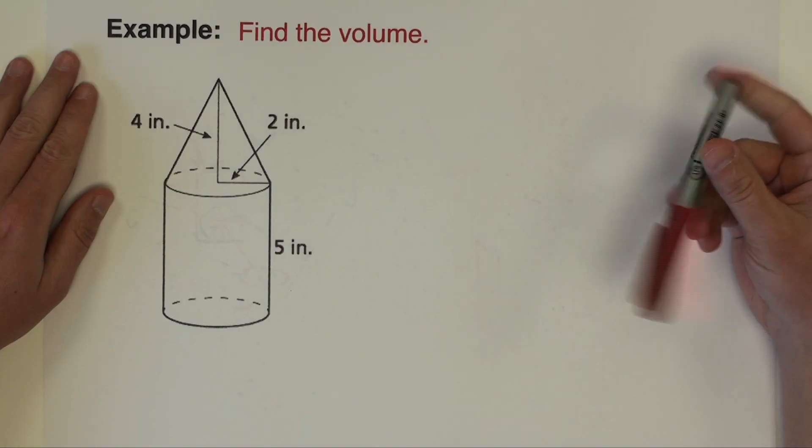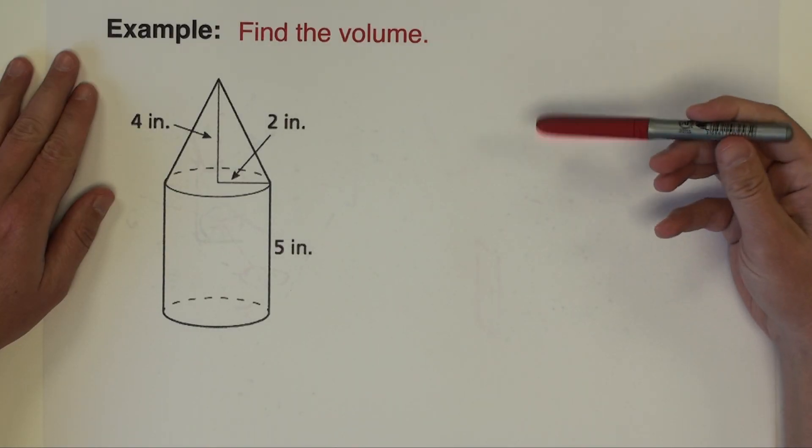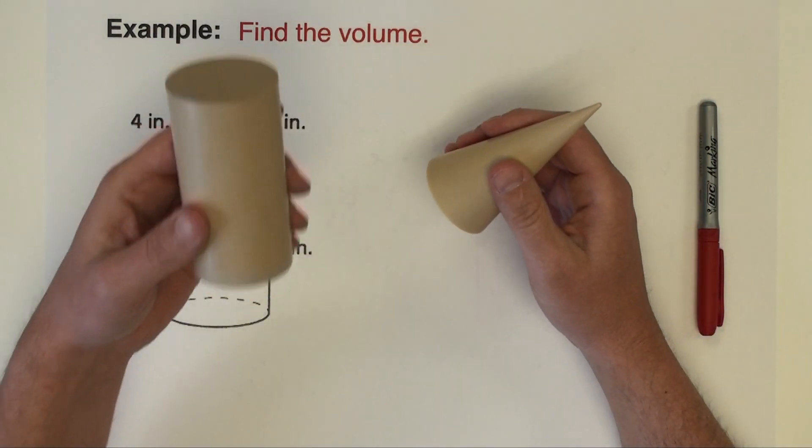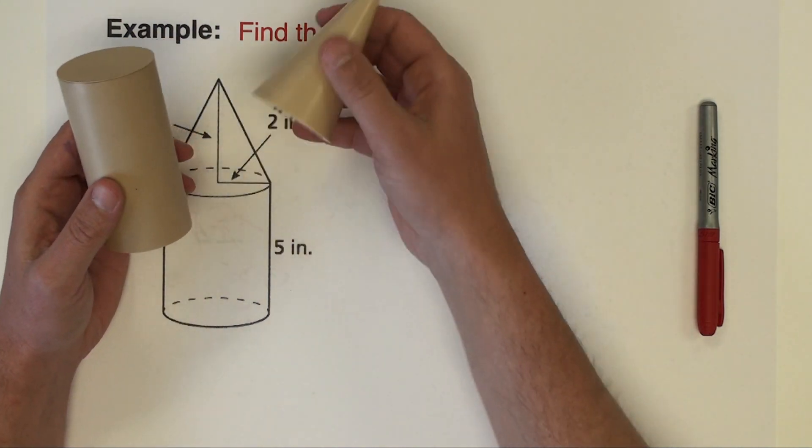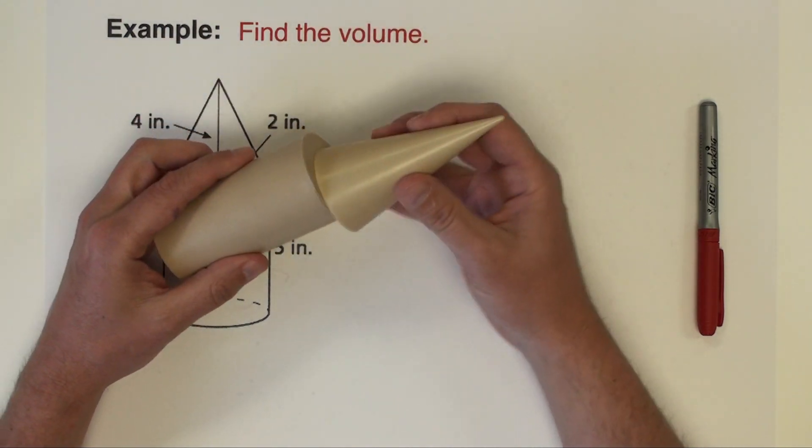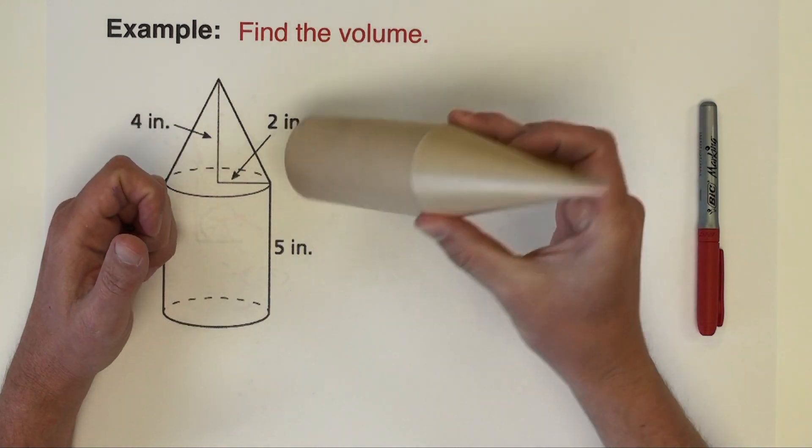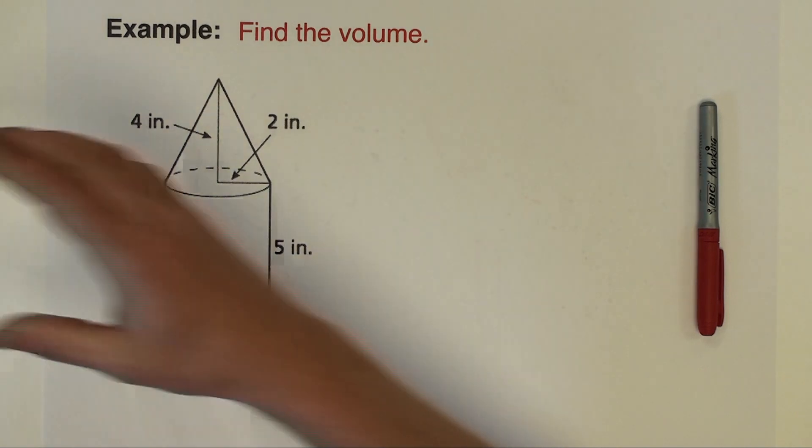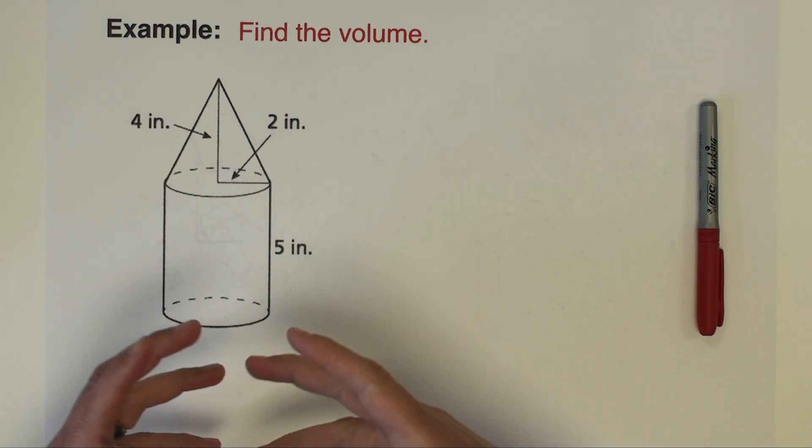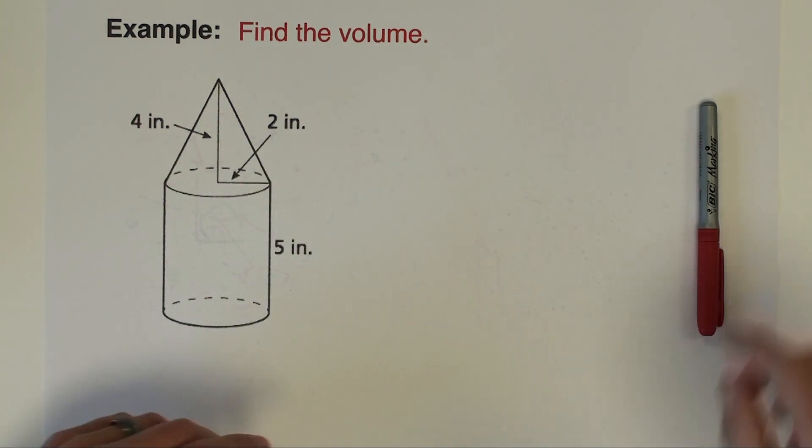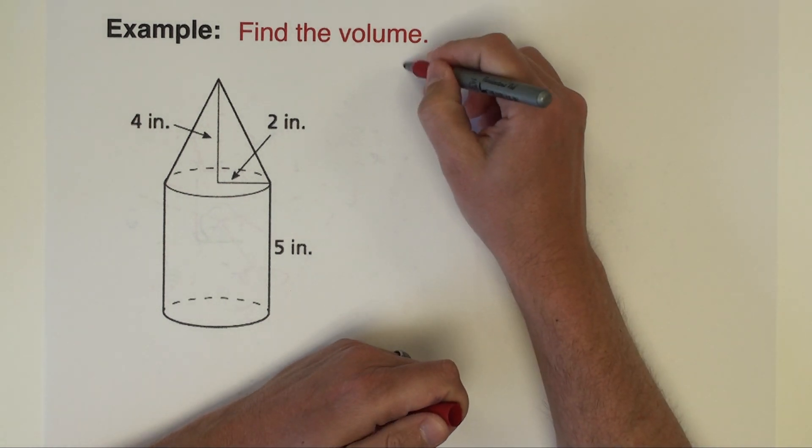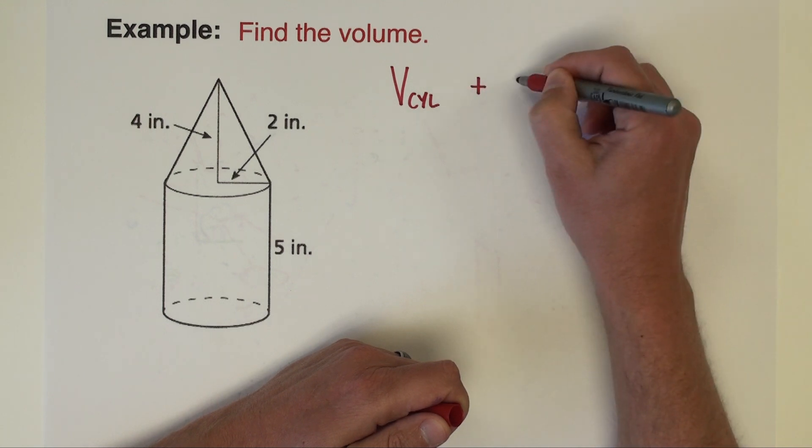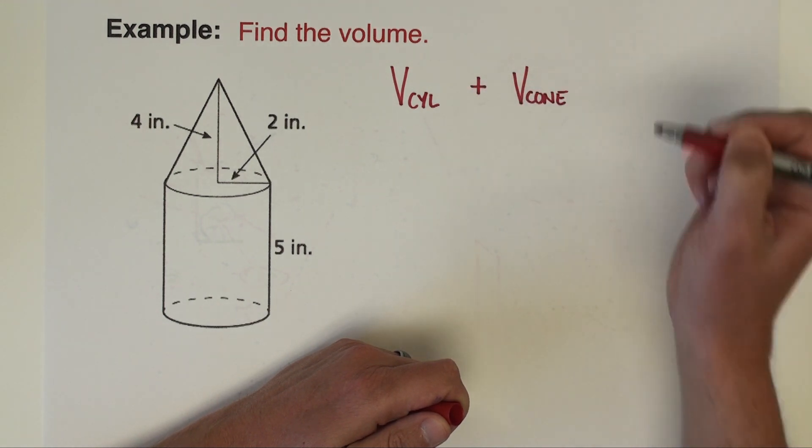All right, the final example problem of this video is a composite shape. We see two three-dimensional solids put together like this. We've got a cylinder on the base and then a cone that's on top of that cylinder, and if you put them together, that's kind of like the shape that we are looking at right here. In order to find the volume of the combined volume of this composite figure, we are going to have to find the volume of the cylinder and add to that the volume of the cone.